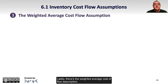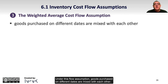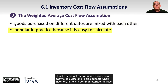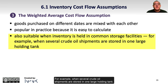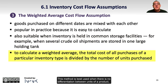Lastly, there's the weighted average cost flow assumption. Under this flow assumption, goods purchased on different dates are mixed with each other. This is popular in practice because it's easy to calculate and is suitable when inventory is held in common storage facilities — for example, when several crude oil shipments are stored in one large holding tank. This method is best used when there is no differentiation between units of a product such as barrels of oil, boxes of cornflakes, valves, etc.